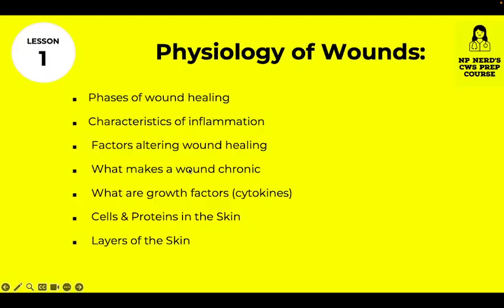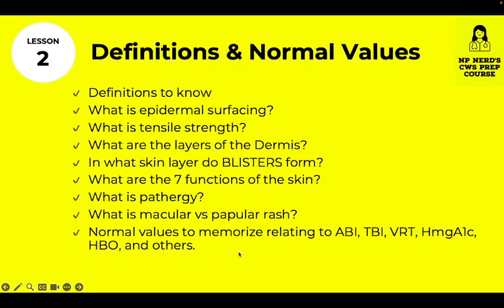In Lesson 1, we'll cover the phases of wound healing, characteristics of inflammation, factors altering wound healing, what makes a wound chronic, what are growth factors, and cells and proteins of the skin and layers of the skin. In Lesson 2, there will be multiple definitions about words that might be included in the test, and then Normal Values — numbers you've got to know for the test.